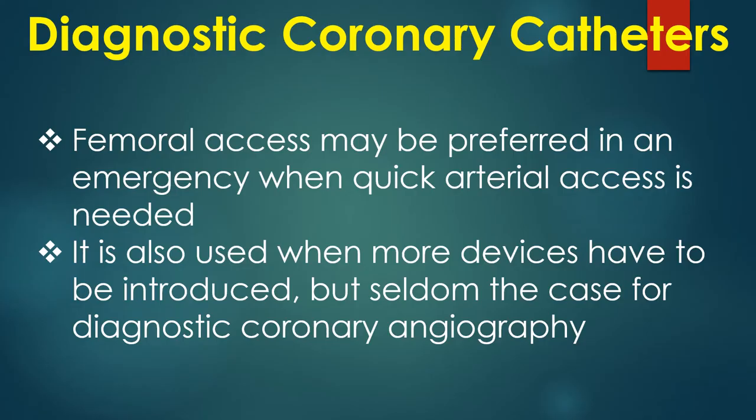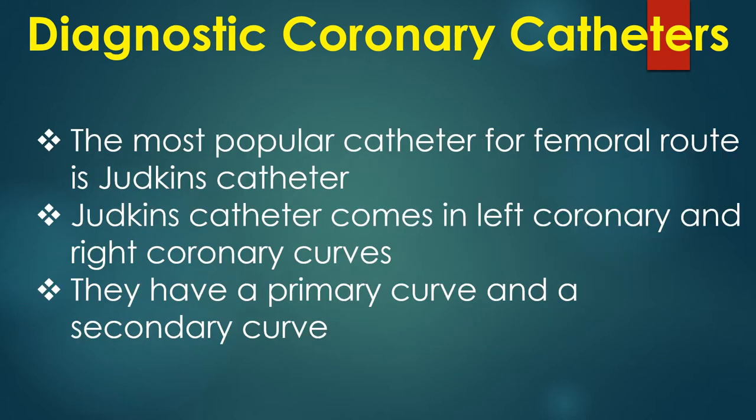The femoral axis may be preferred in an emergency when quick arterial access is needed. It is also used when more devices have to be introduced, but that is seldom the case for diagnostic coronary angiography. The most popular catheter for the femoral route is the Judkins catheter.